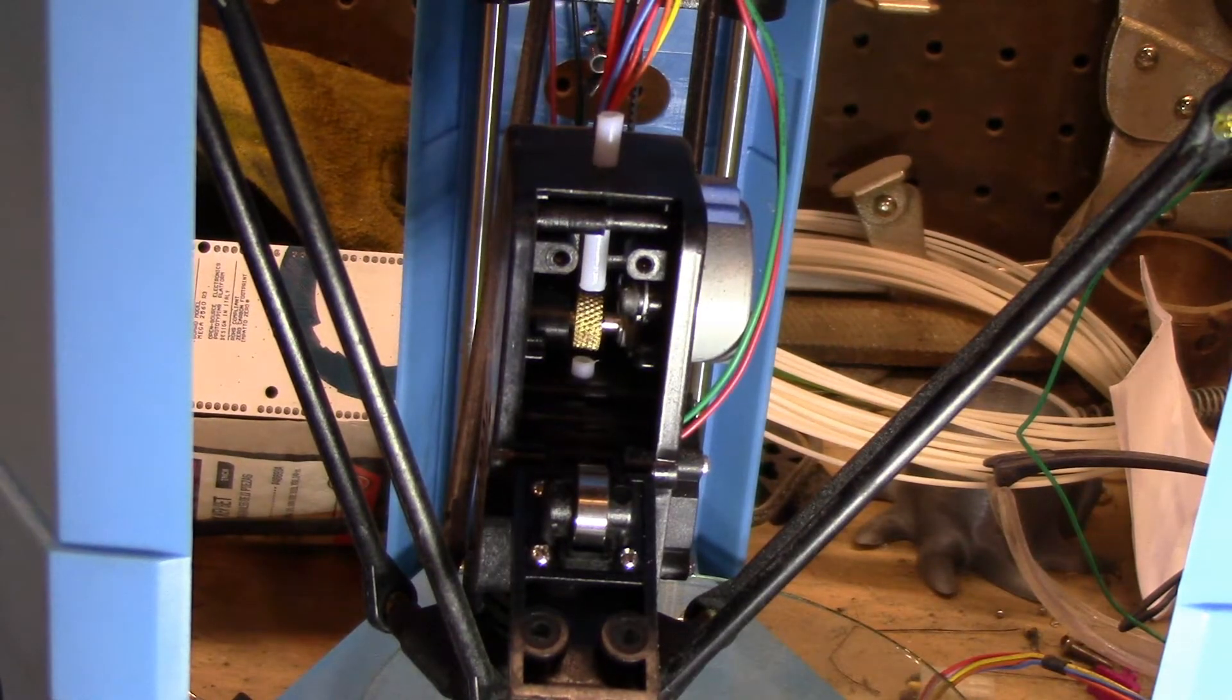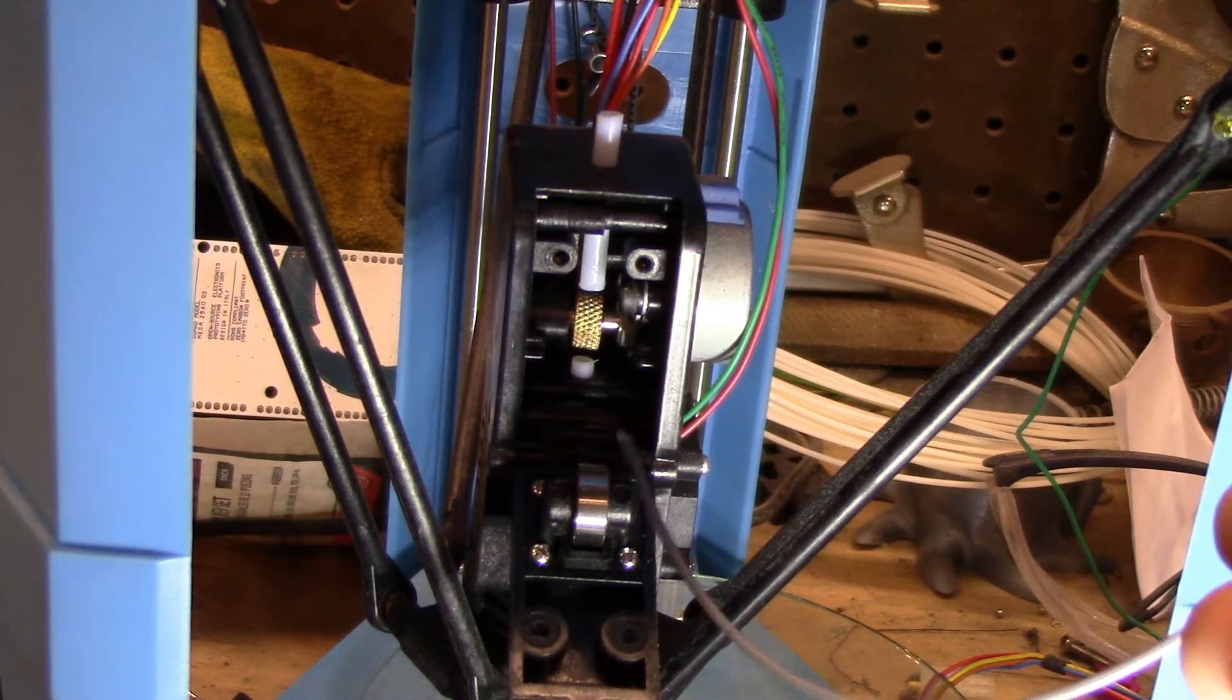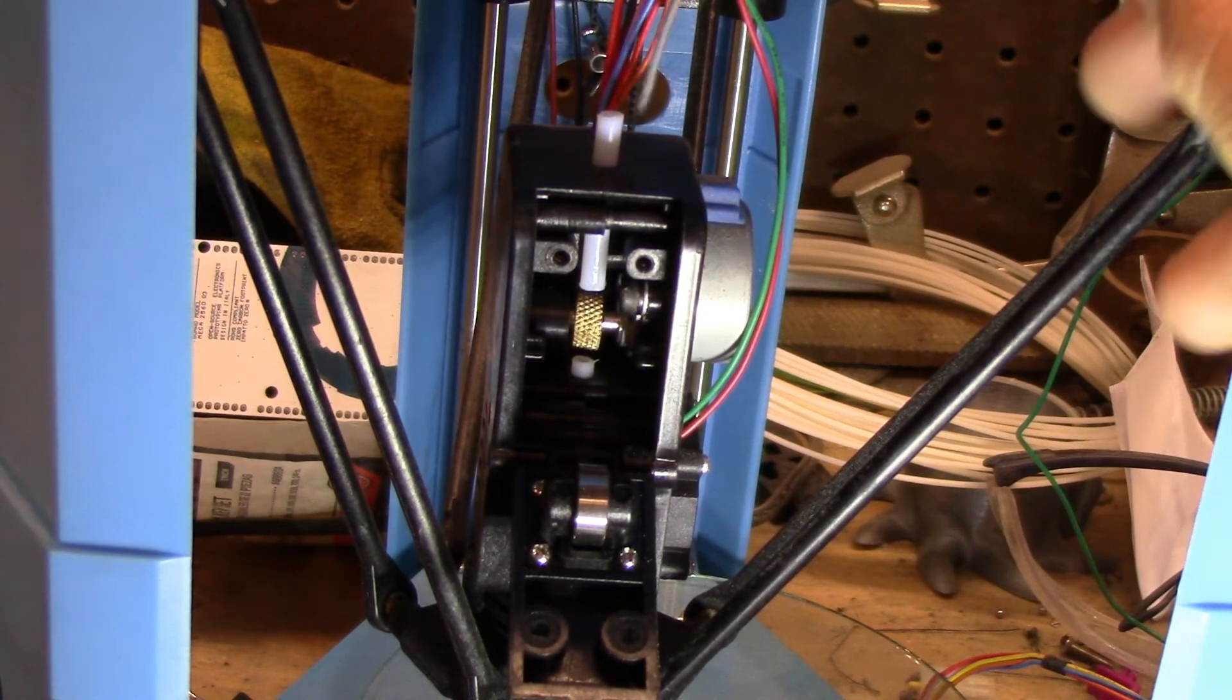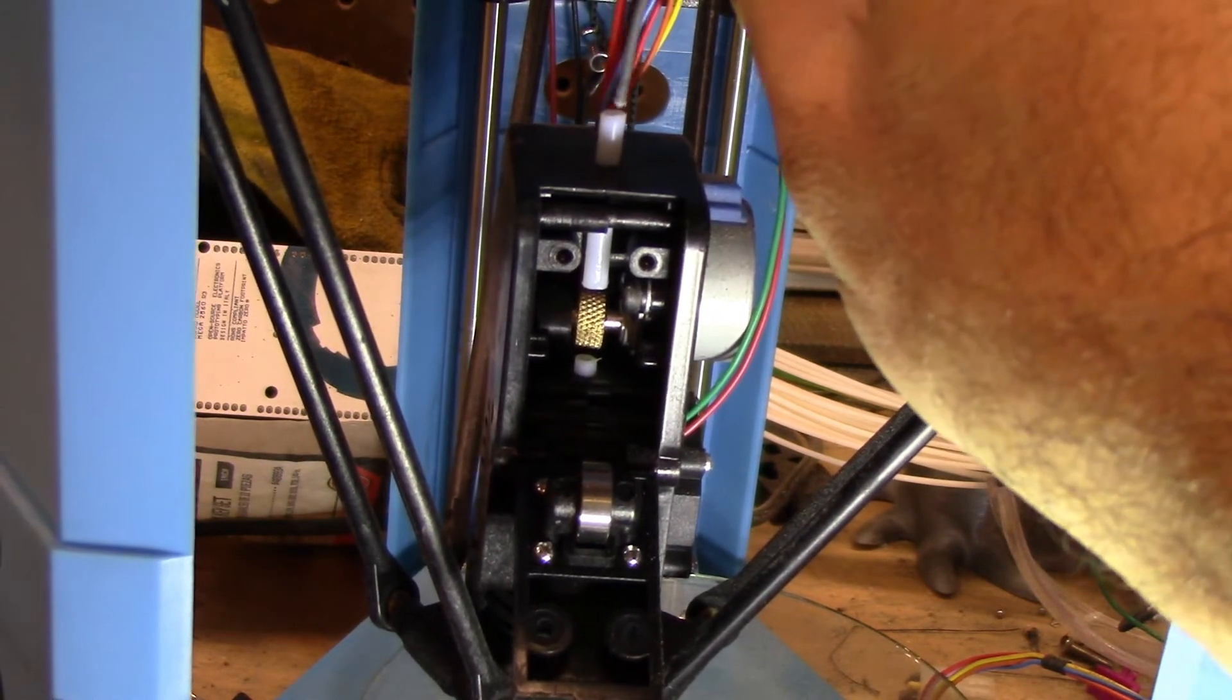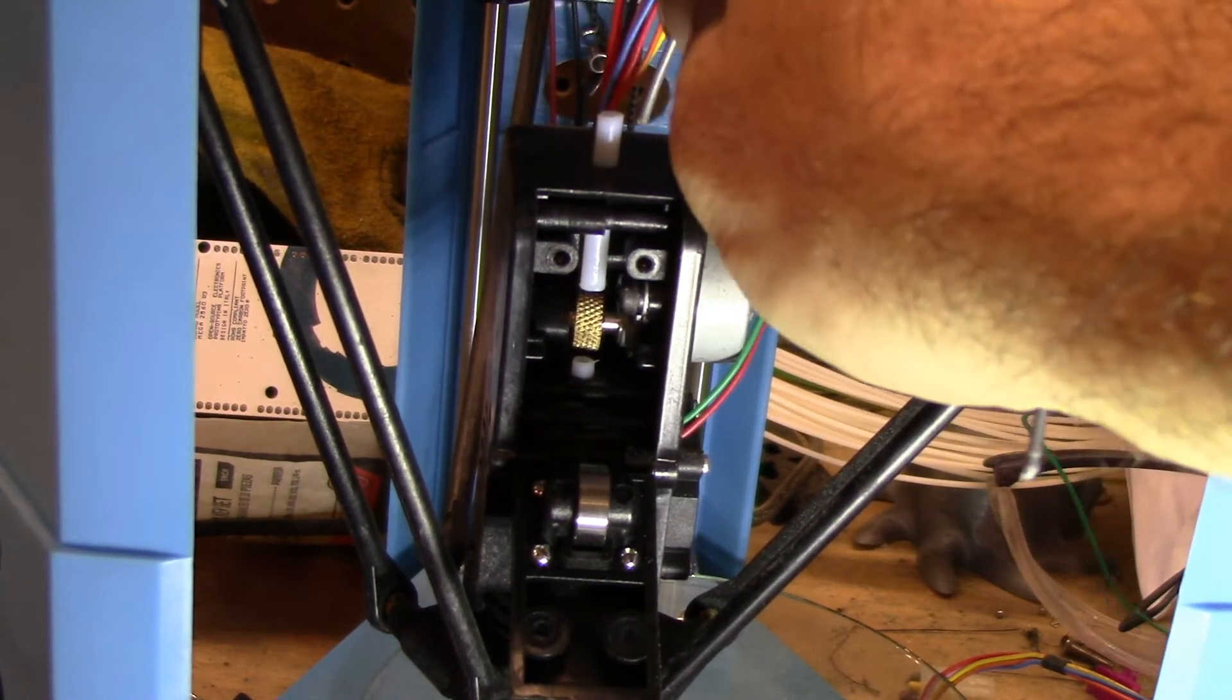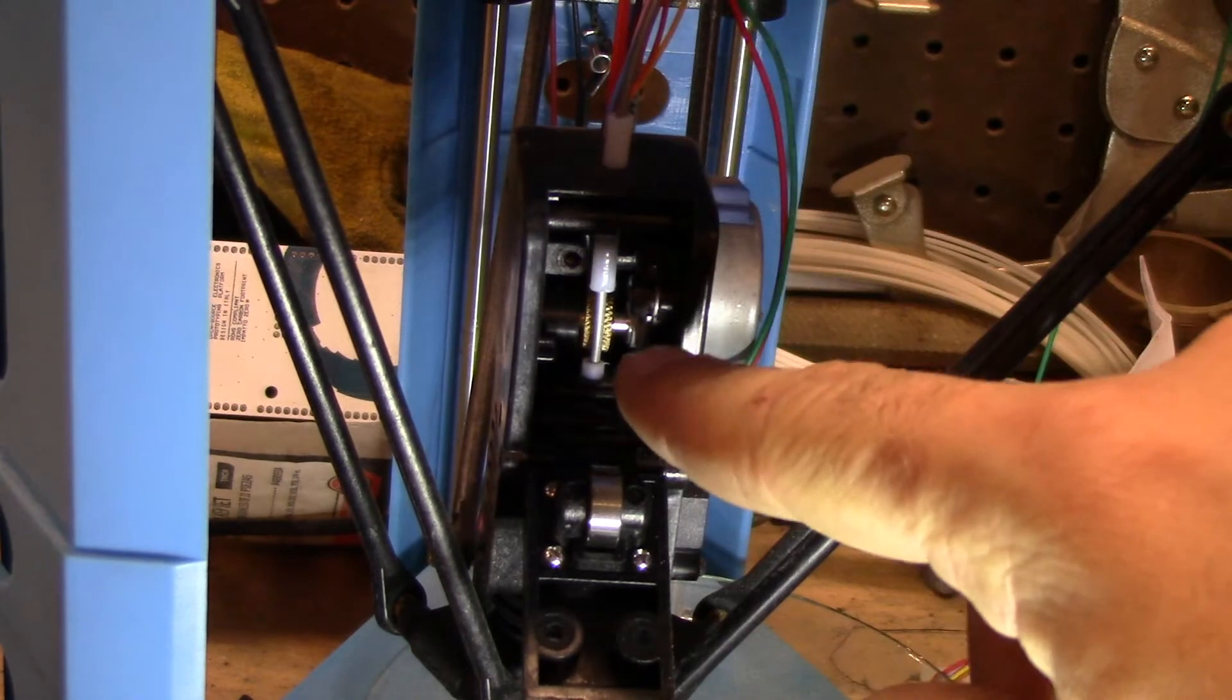Between all those, those are the most common issues. This bearing either not spinning or not pressing against the filament going through this spot here. If I feed it down through, you'll see exactly where it's supposed to go. The bearing presses against the filament in that path there, right here.